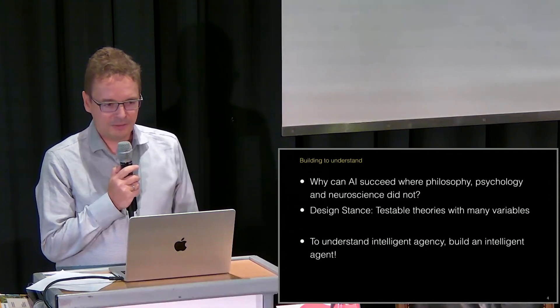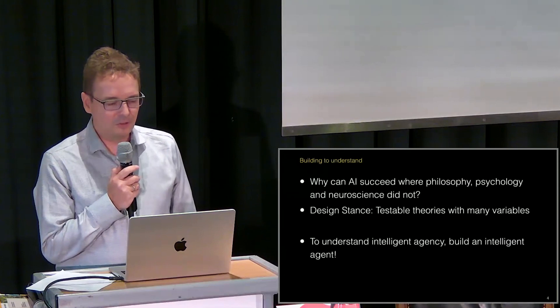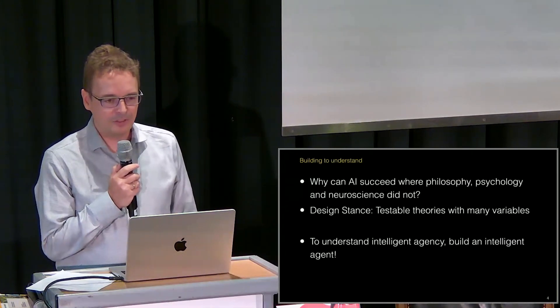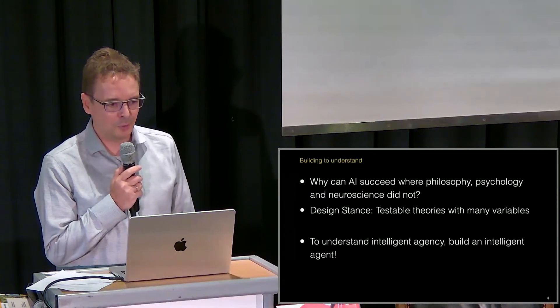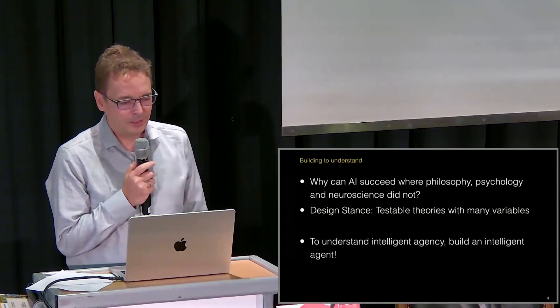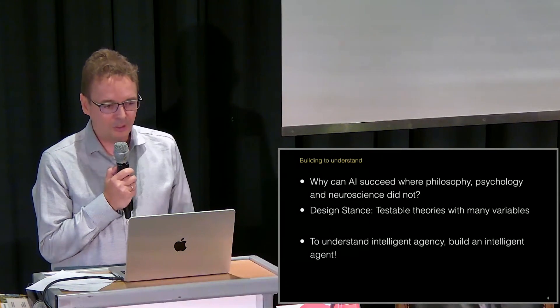And AI, computer science, has a very interesting advantage that many other disciplines have not. We can build testable models with many variables and see if they produce a certain performance. That's a criterion that doesn't exist in psychology, for instance.